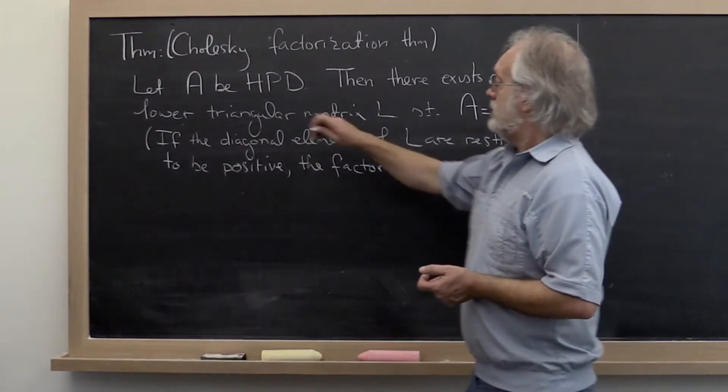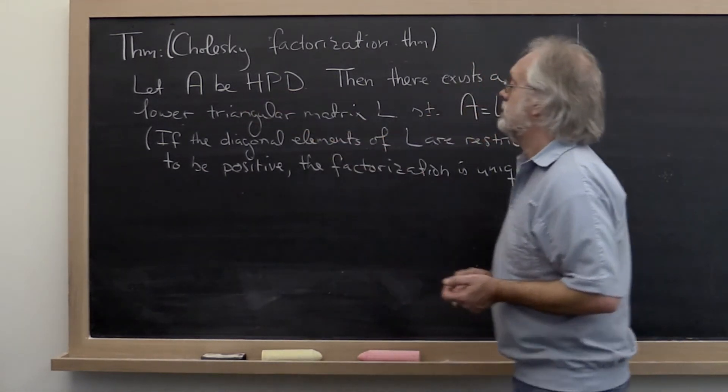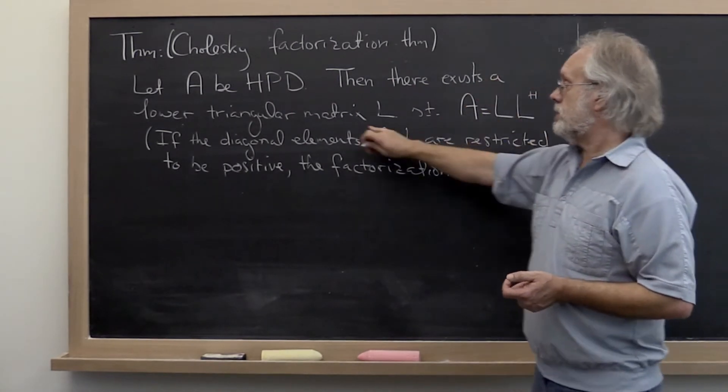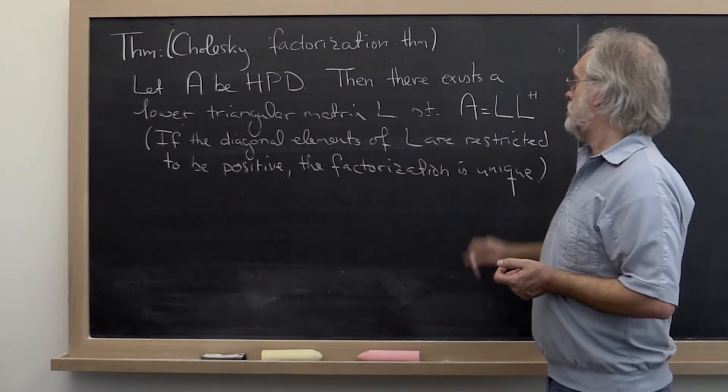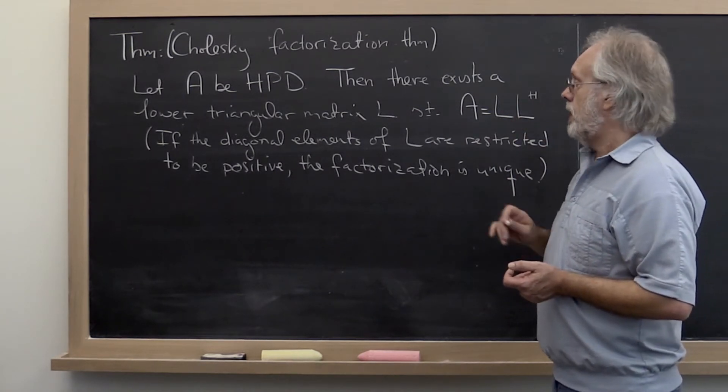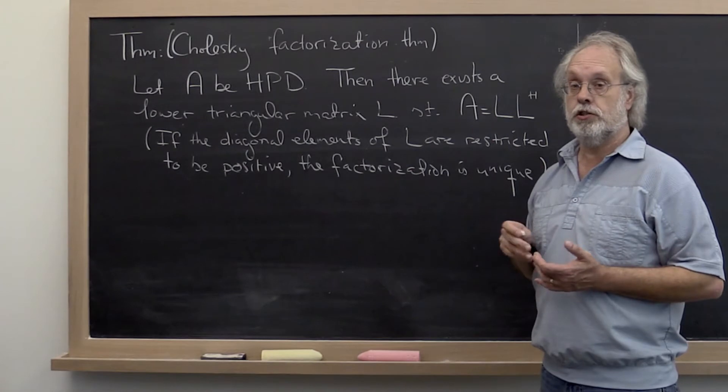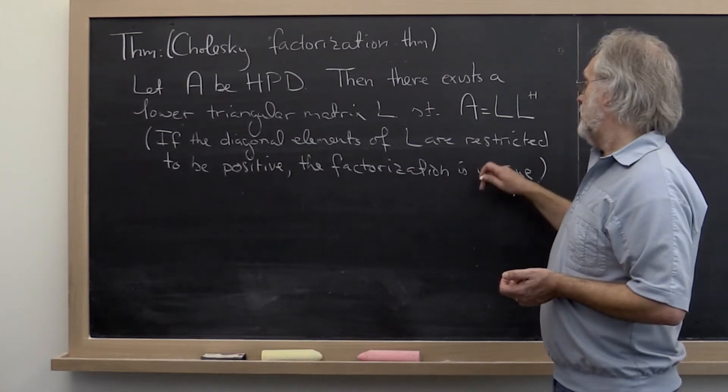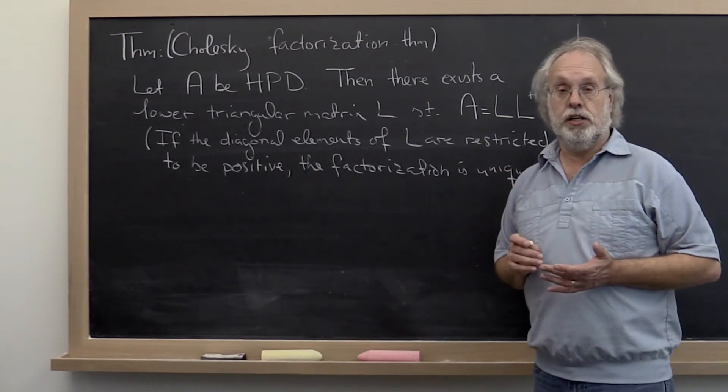If A is Hermitian positive definite, then there exists a lower triangular matrix L such that A equals L times L Hermitian transpose. And if we restrict the diagonal elements of L to be positive, then the factorization is unique.